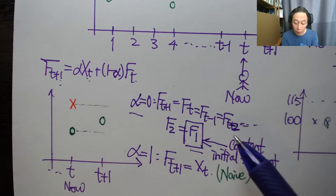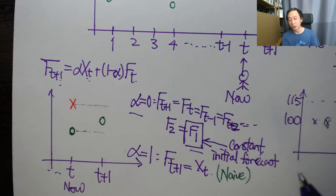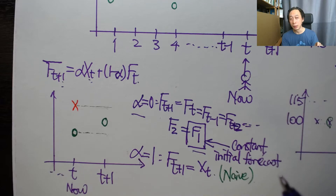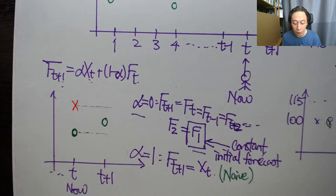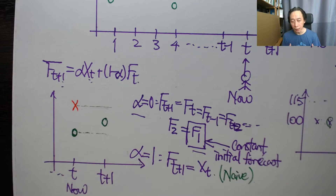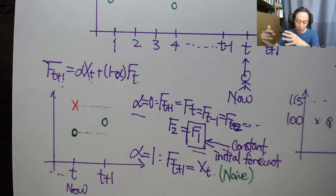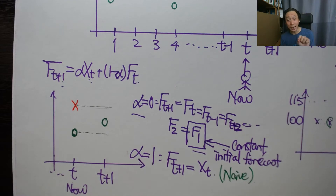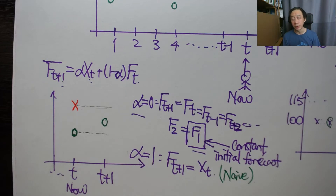Much like the moving average method, exponential smoothing adapts to both extremes. But the nicer thing is that alpha is not a discrete integer — it's a continuous value, giving us infinite choices. So long as alpha is between zero and one, we can plug it into the formula. This gives exponential smoothing the ability to continuously and smoothly adapt to changing data, making calculation very efficient.